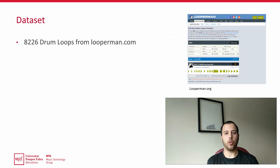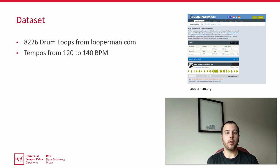To train and evaluate these models, we use an in-house collection of 8,226 drum loops from looperman.com. The loops have tempos between 120 and 140 beats per minute.